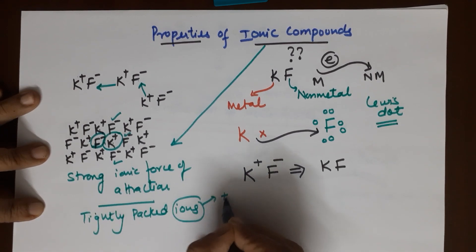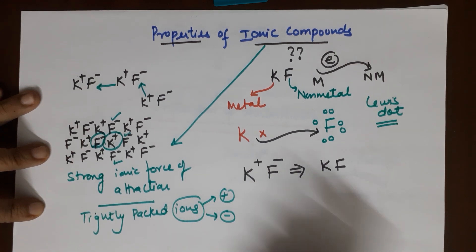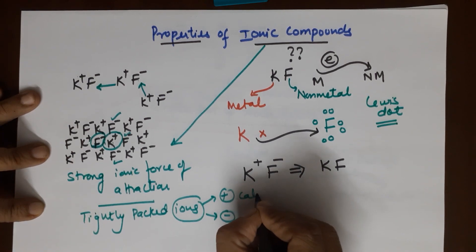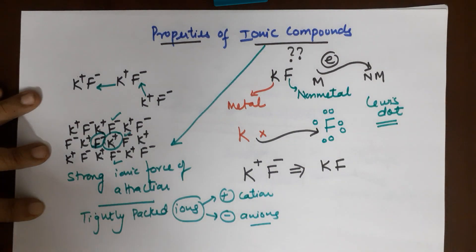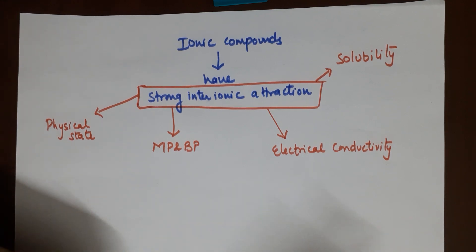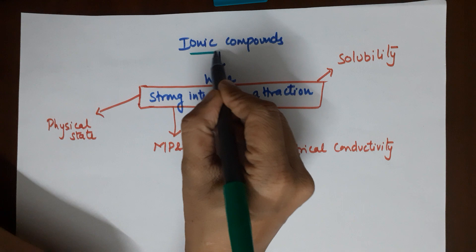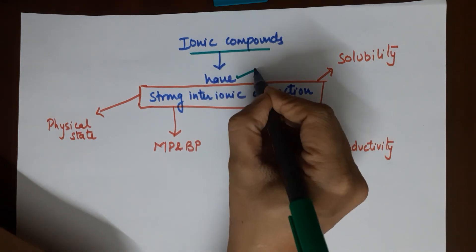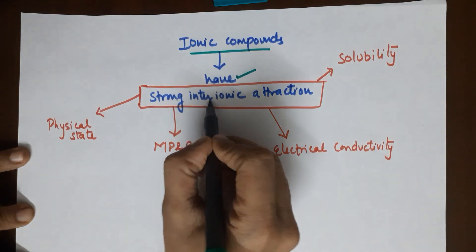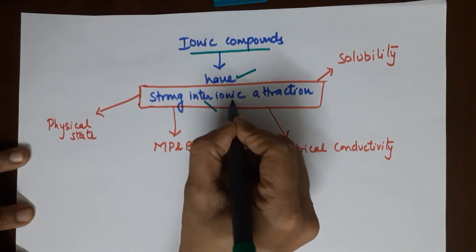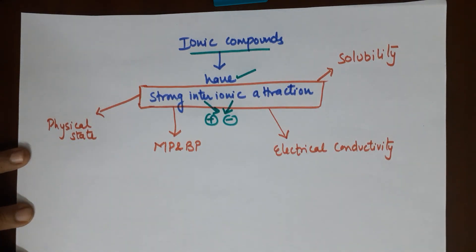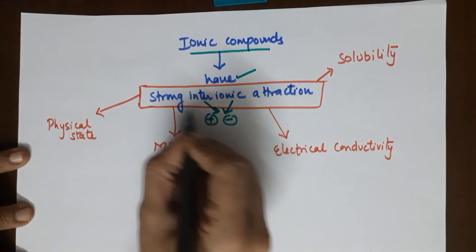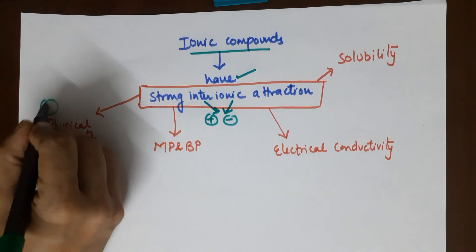Positively charged ions are called cations; negatively charged ions are known as anions. Moving on to the properties of ionic compounds — they are known to have strong inter-ionic force of attraction, meaning between the positively charged ion and the negatively charged ion. These ions are tightly packed and strongly attracted. The first physical property is physical state. Physical states are three: solids, liquids, and gases.